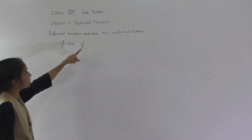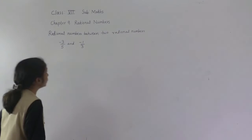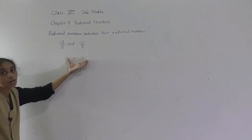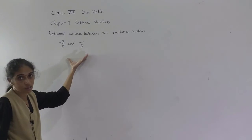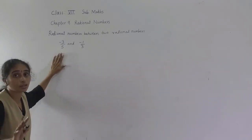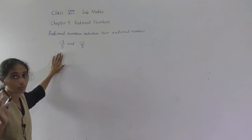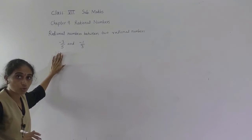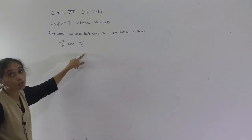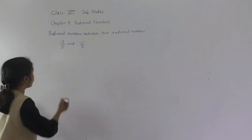Now let us learn to find rational numbers between two rational numbers. The given numbers have different denominators, so we need to make the denominators the same by finding the LCM.